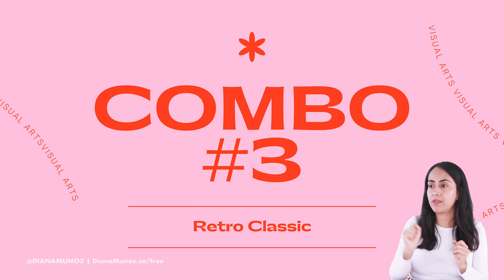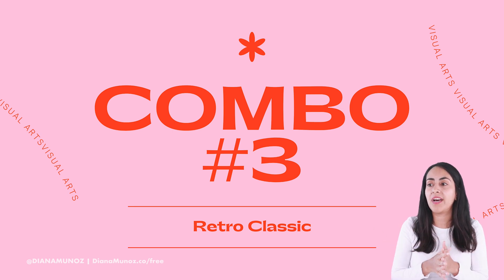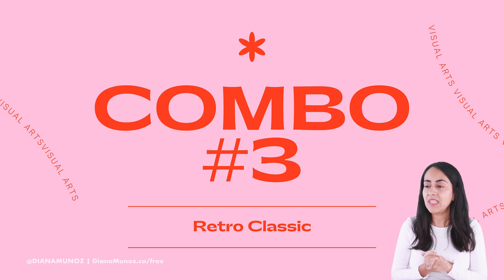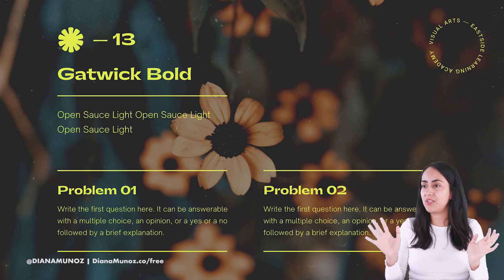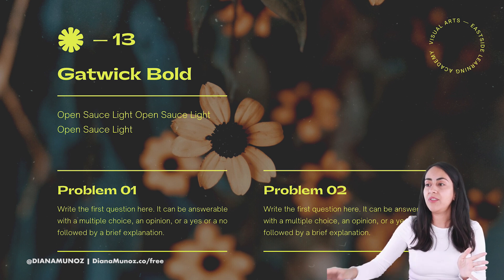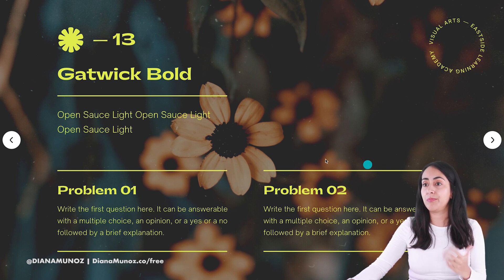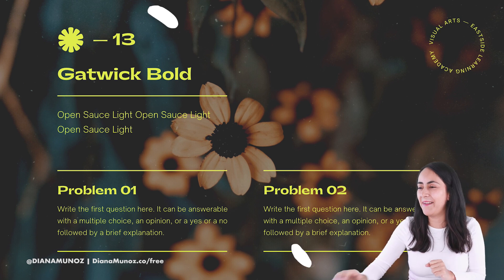Combo number three uses a retro, classic aesthetic style that I think will be very trendy in 2021 — it was already popular in 2020 and will likely evolve further this year. The title font is Godwick Bold and for the body we use Open Sauce Light. Godwick Bold is so easy to use — I really recommend it.